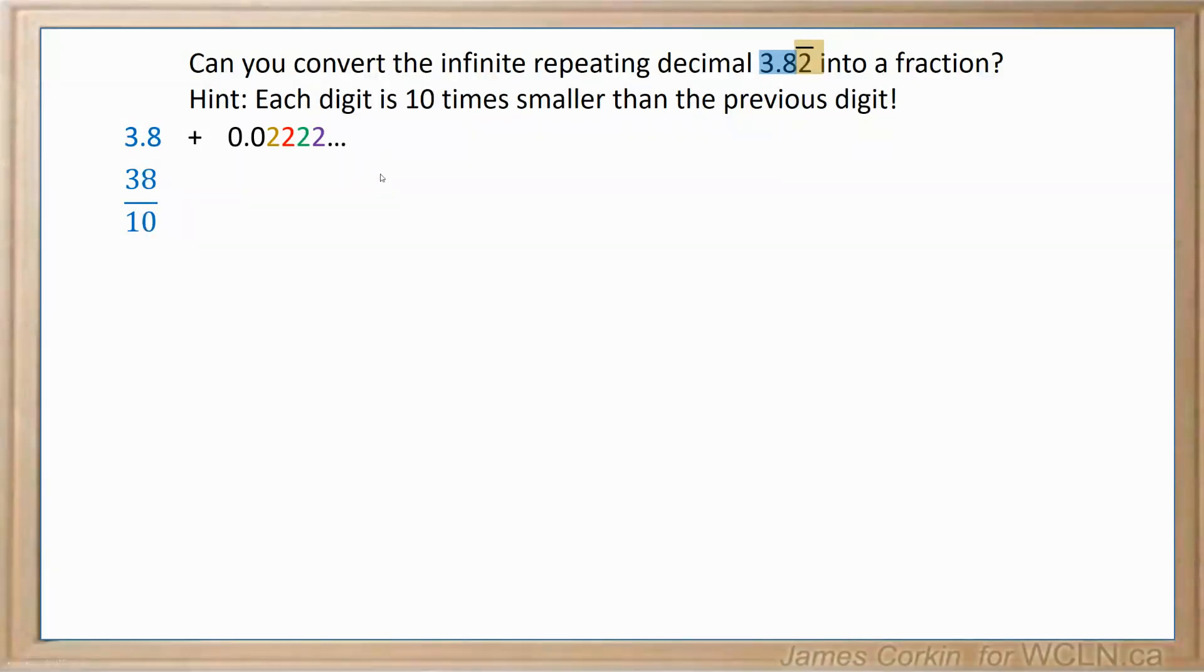This one's a little more complicated. What you have to realize is that this is a sequence where you have an initial value of 0.02, and then each term after that is the other 2, which is going to be 10 times smaller. So it looks like this, 0.02 plus 0.002, and so on. So this is our sequence.